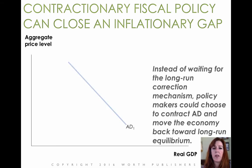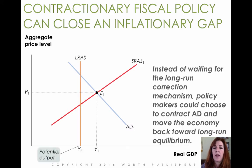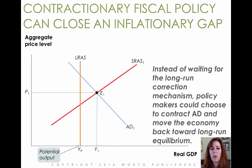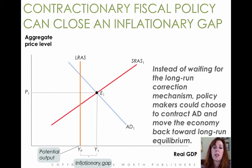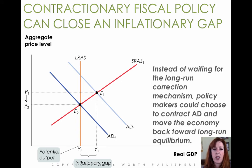What contractionary policy looks like: you have an economy at short-run equilibrium that is temporarily above its potential output. The economy is growing faster than it's really set up to do, so you're probably going to start having problems — the biggest of which will be inflation. To remove this inflationary gap, through the use of fiscal policy you slow down spending, shift the aggregate demand curve to the left, and eliminate that inflationary gap, bringing output back to potential.